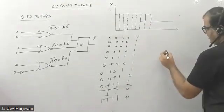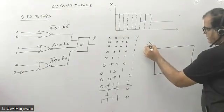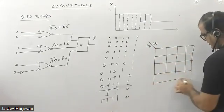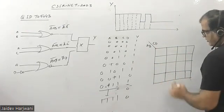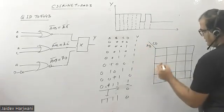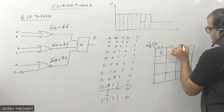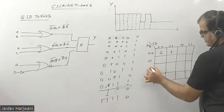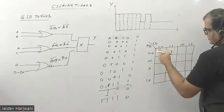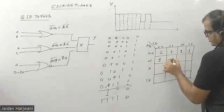Let us make a K-map for this problem. This is a four-variable K-map with ABCD. The K-map is set up with rows labeled A-bar B-bar, A-bar B, AB, AB-bar and columns labeled C-bar D-bar, C-bar D, CD, CD-bar. The first six entries are one: positions zero, one, two, three, four, and five are all one.